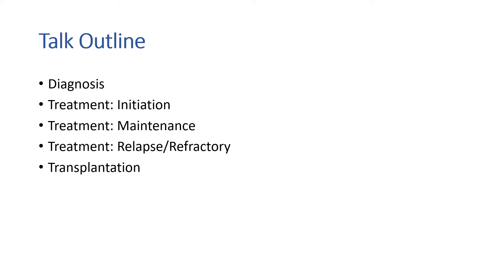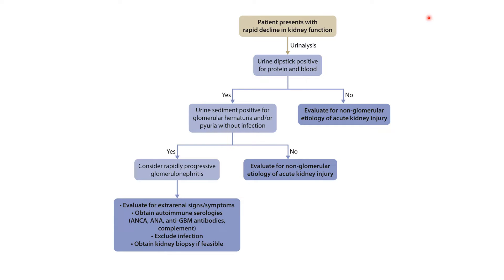What about the diagnosis of ANCA-associated vasculitis? Patients commonly present with rapid decline in kidney function and rapidly progressive glomerular disease. For patients with rapid decline in kidney function, you must perform urine analysis. If the urine analysis is not positive for protein or blood, evaluate for a non-glomerular cause of the acute kidney injury.